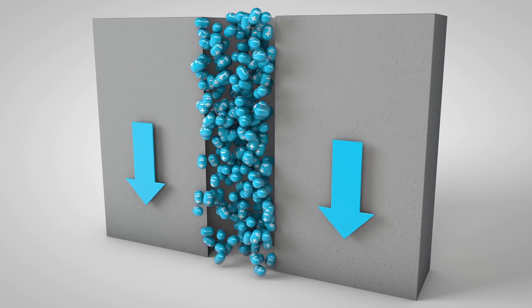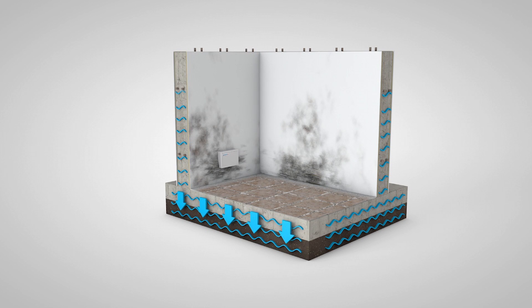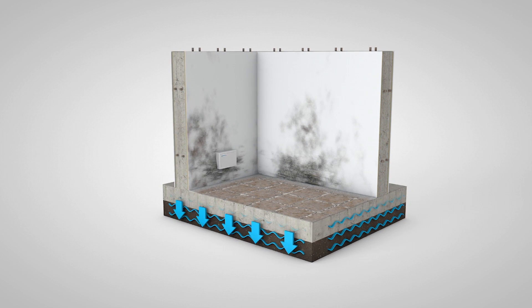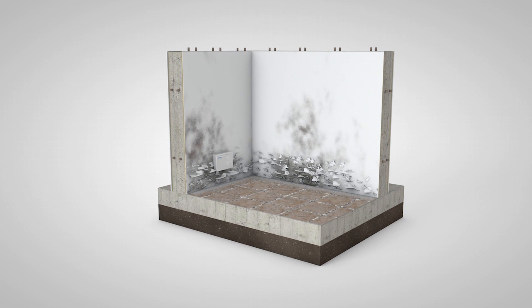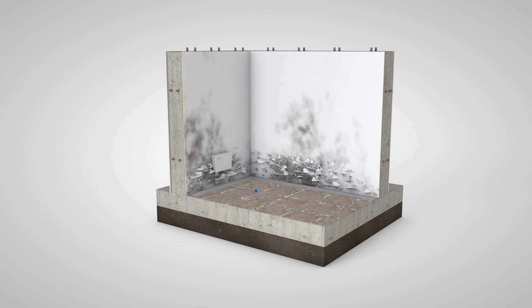When it dries, paint and mortar become unstuck from the wall, resulting in it becoming chipped. This is a result of the salts dissolved in the water as it rises.